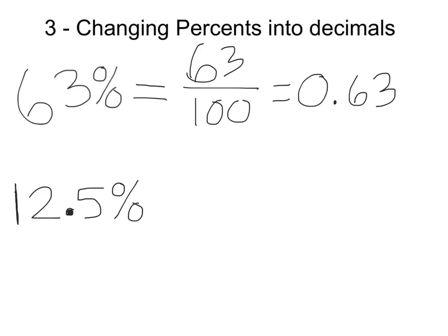Now let's say we had a decimal in our percentage, and we still want to convert it to a standard decimal. Well this right here might seem a little tricky, it has another step included, but it's still pretty easy. First we want to write this as a fraction, and we want to write the whole number over 100. So we still have 12.5 over 100.